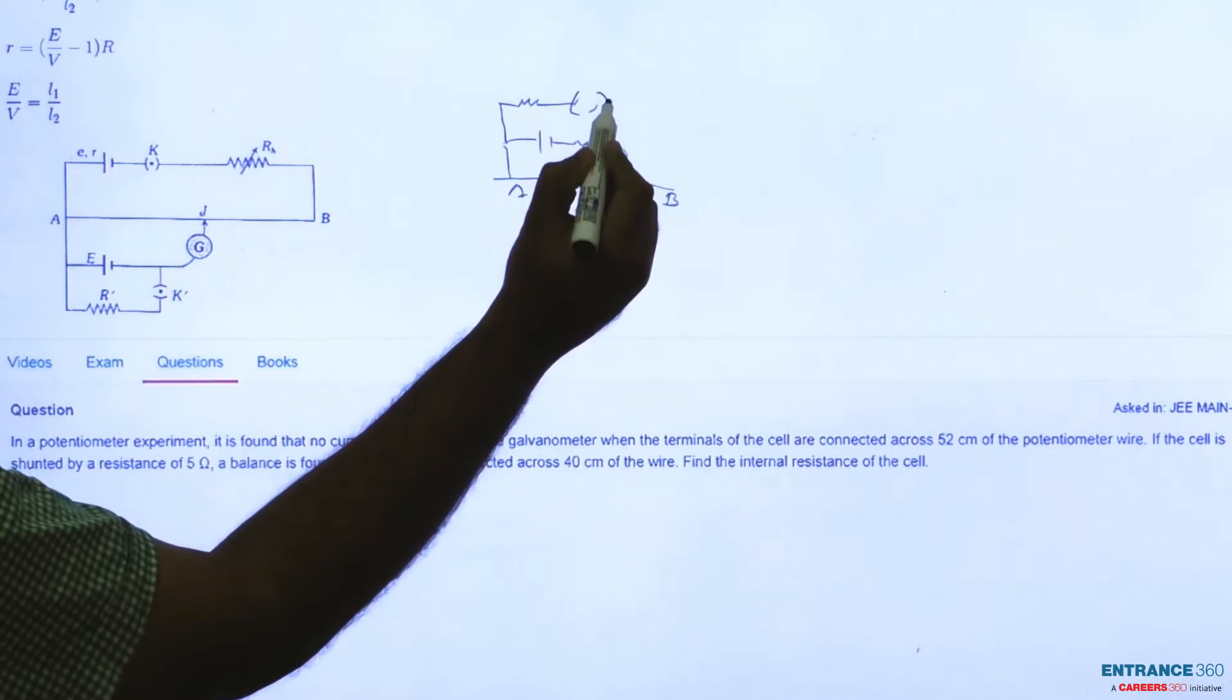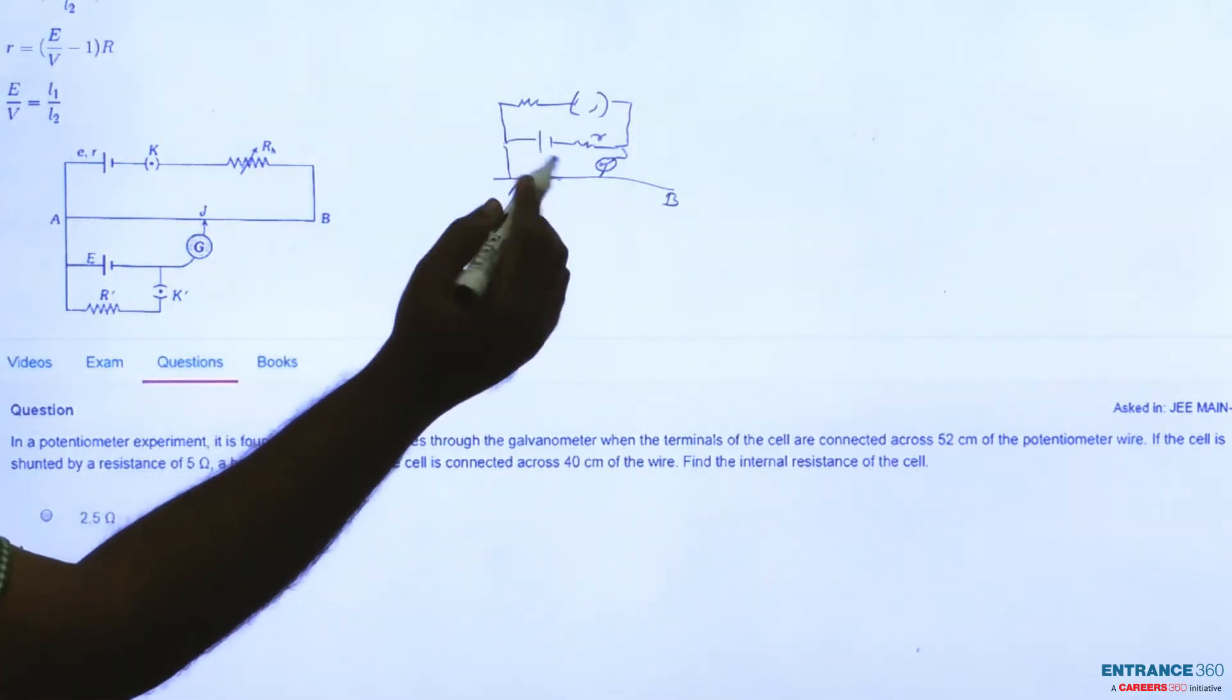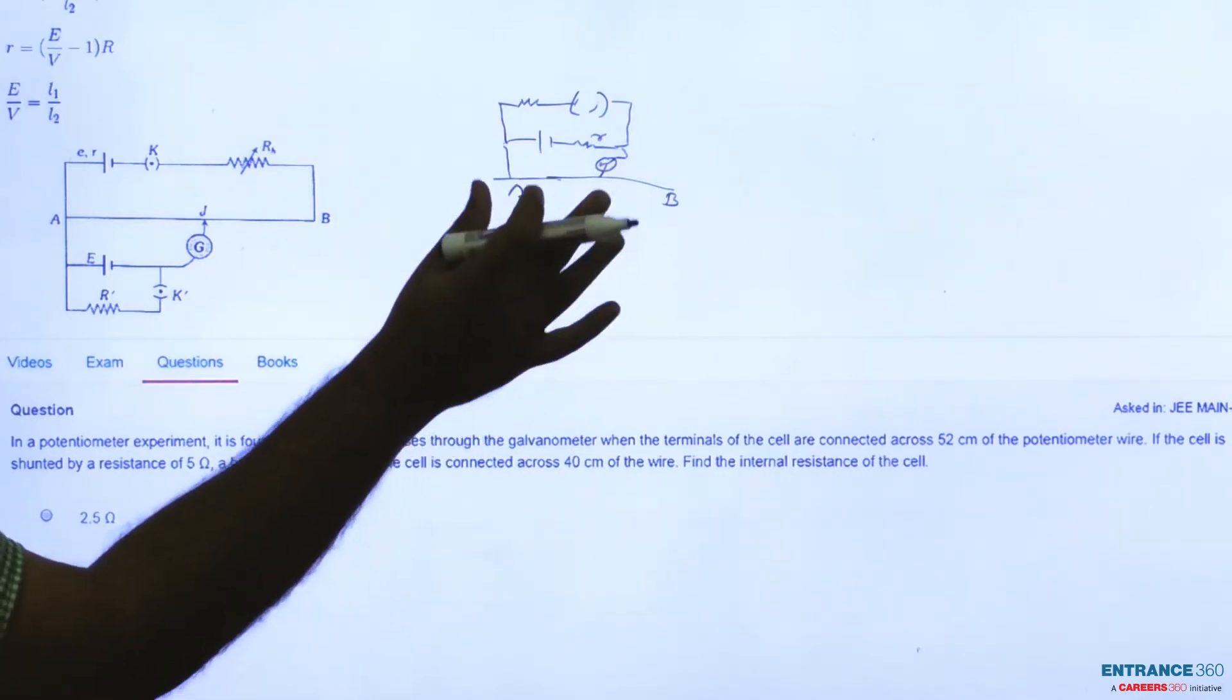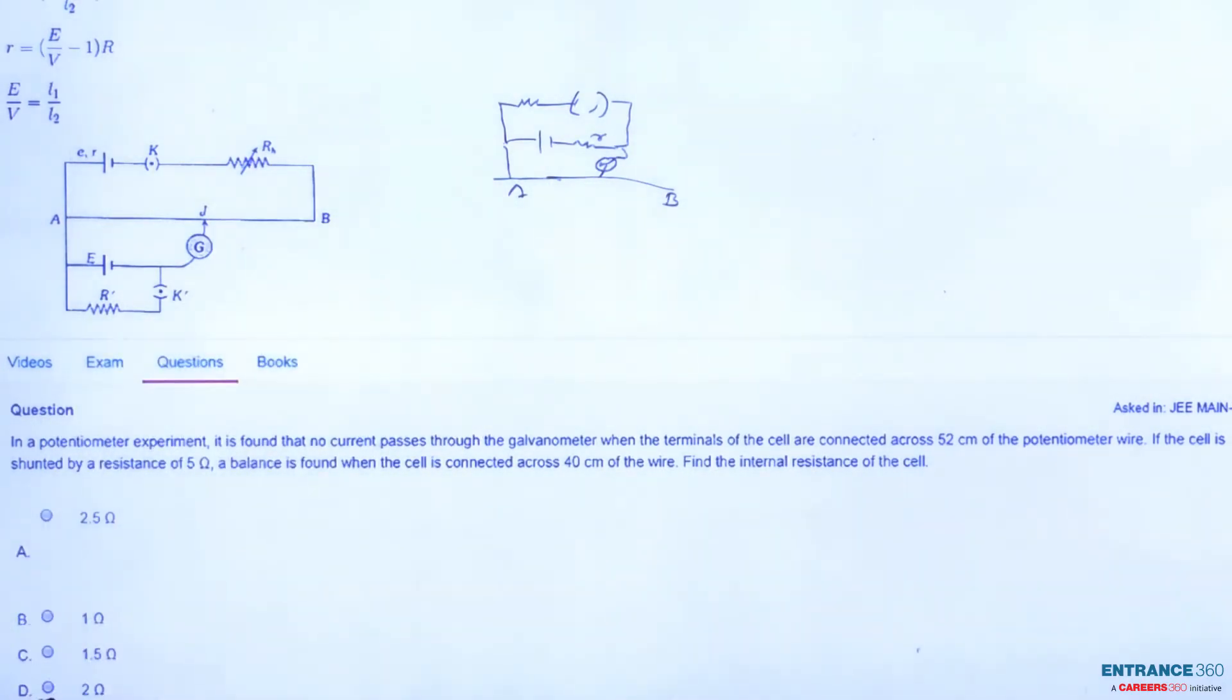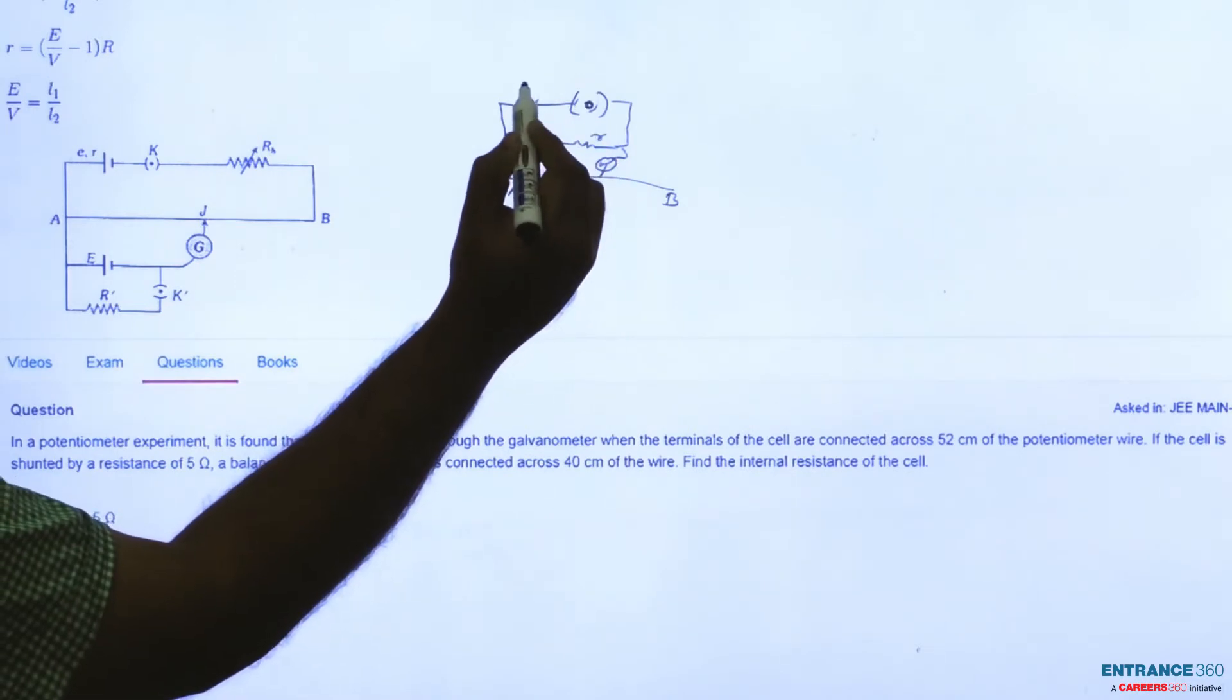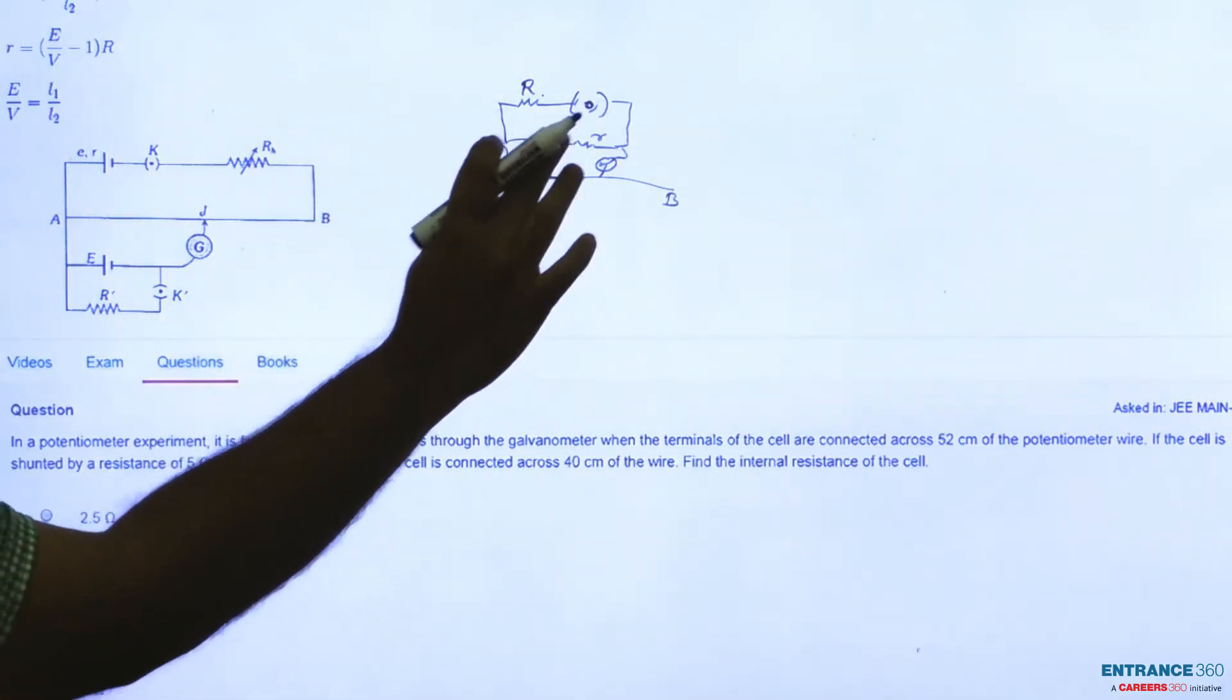At first we will not include this resistance in the circuit so that no current flows through the cell, therefore the EMF of the cell E will be proportional to the length. At the next time we will include this shunted resistance R in the circuit so that the current will flow through the cell.